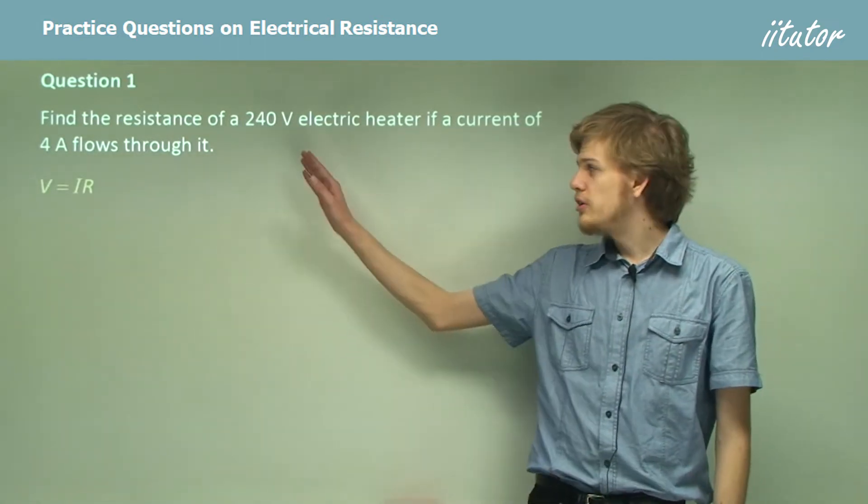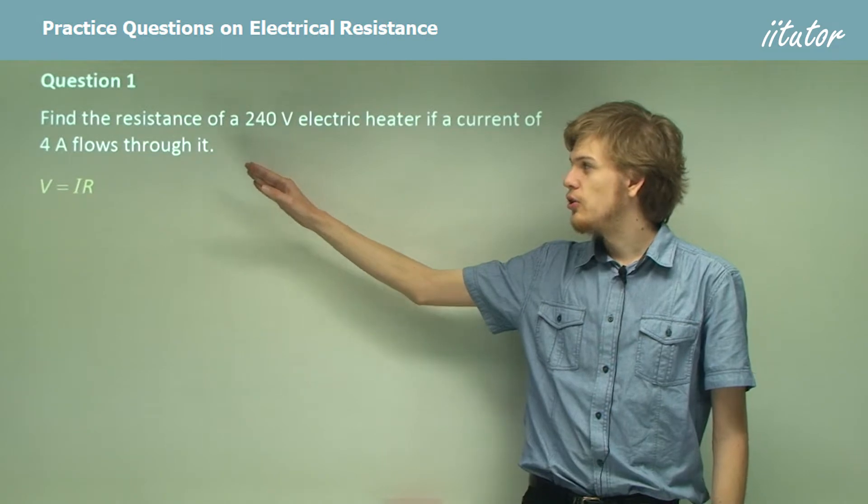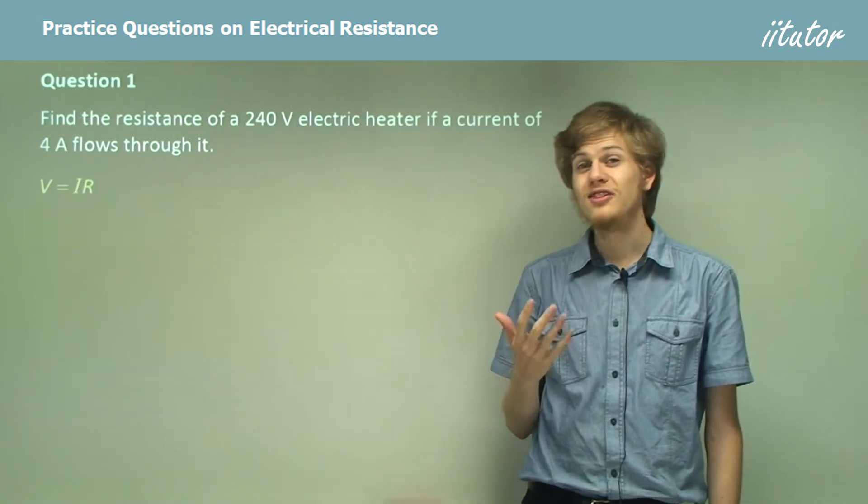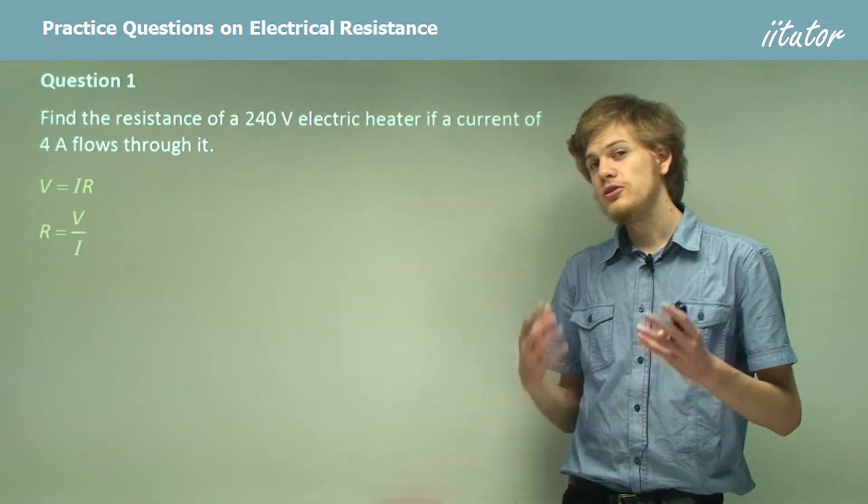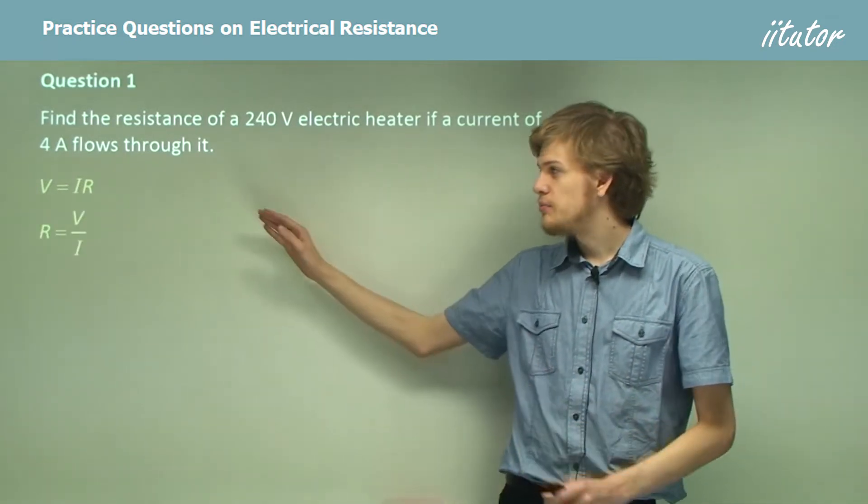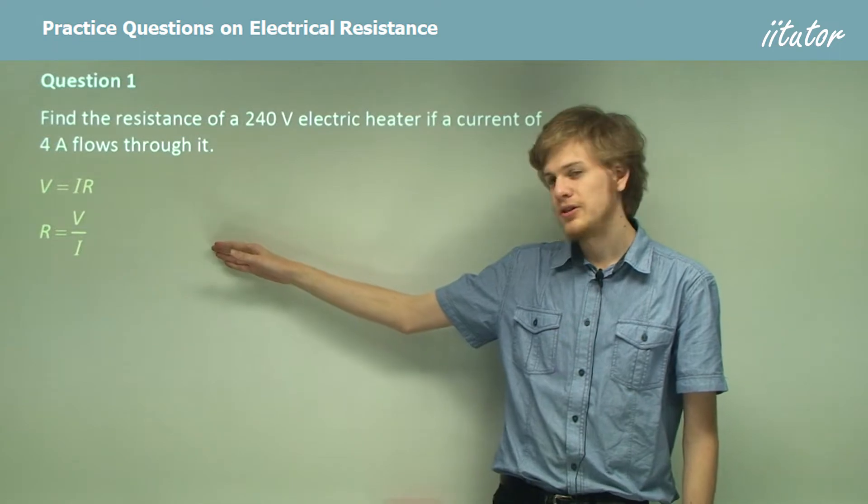V equals IR. Now we already know V and we already know I. What we want to find out is R so we need to rearrange this equation. We can divide both sides of the equation by I to produce this equation.